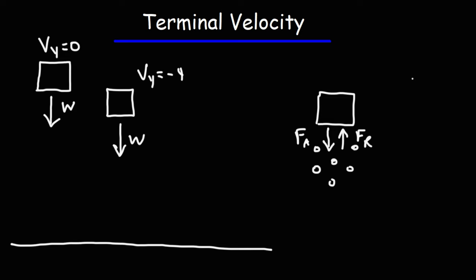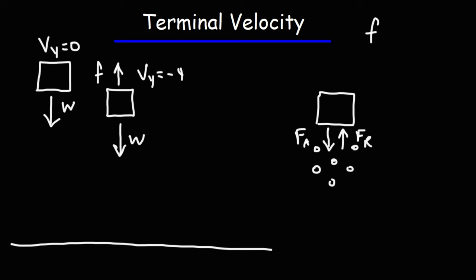We can call it or describe it as lowercase f. This air resistance is dependent on the speed of the object. So the faster the object is falling, the greater the air resistance will be. So as the vertical speed increases, air resistance is going to increase.